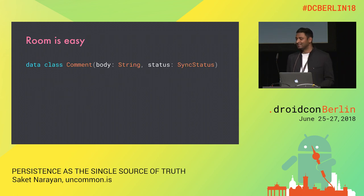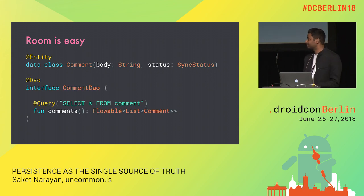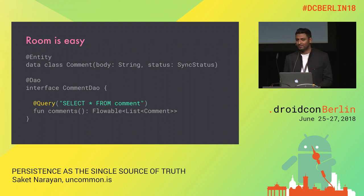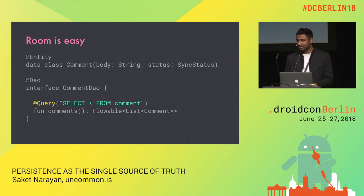The reason I like Room so much is because it's dead simple to use. For creating a new table, all you have to do is write a data class — a simple POJO — and mark it as an entity. Next, you define queries for how you want to access the table, and that's it — Room handles everything else. Room also verifies SQL statements at compile time, which is a huge reason I feel more confident using it: if my code compiles, I can be sure it will work. If you're interested in learning more about Room, there's a talk happening in this room at 4:35 p.m. that you should definitely attend.